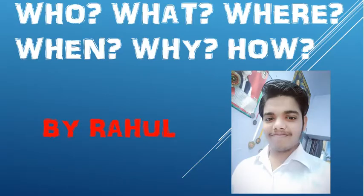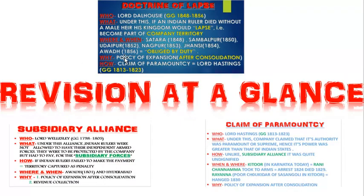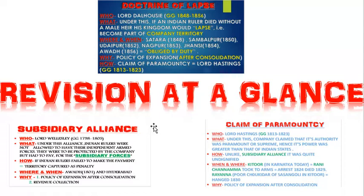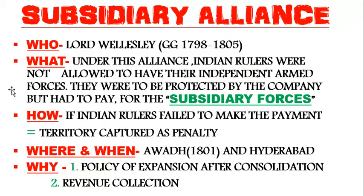This lecture covers a revision at a glance. First we will discuss subsidiary alliance, then claim of paramountcy, then the doctrine of lapse. This lecture is helpful only for those who have already covered these topics separately. Kindly go to the playlist section of GS with Rahul to find all relevant information.